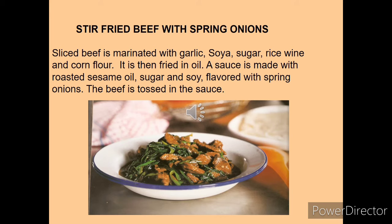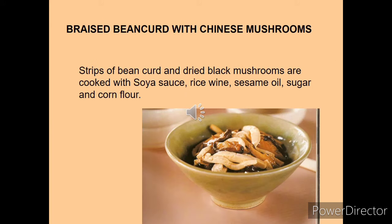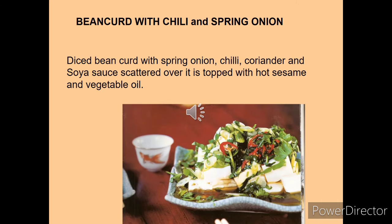Stir-fried beef with spring onions: beef is first roasted then stir-fried in the wok with spring onion. Stir-fried lamb with leeks: marinated sliced lamb cooked with dried mushroom and leeks in a yellow bean sauce. Braised bean curd with Chinese mushroom: strips of bean curd and dried black mushrooms are cooked with soy sauce, rice wine, sesame oil, sugar and corn flour.